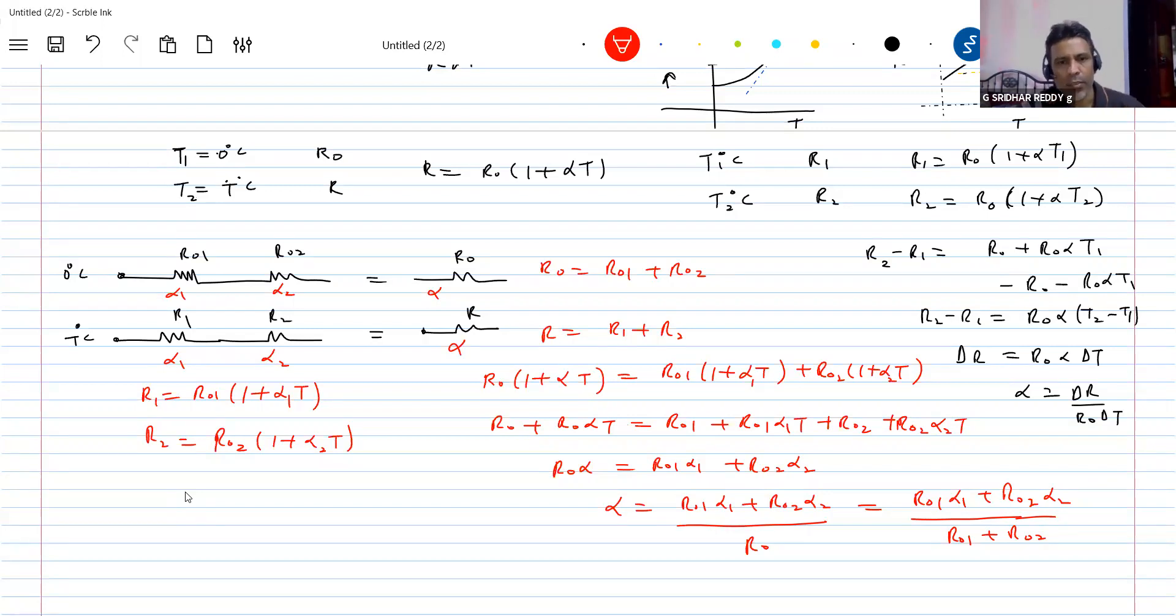Okay, got this. So when they are in series, the effective coefficient of thermal resistance of a material should be different. If I want to replace these two with an equivalent material, what should be the alpha of that material? This is the thing. Are you able to understand what I am discussing?